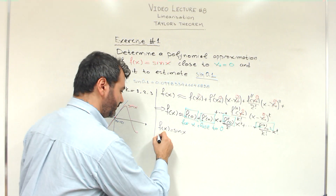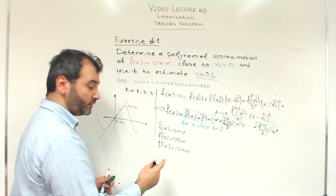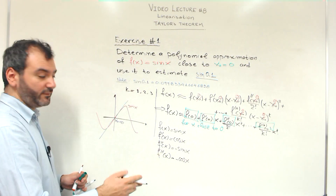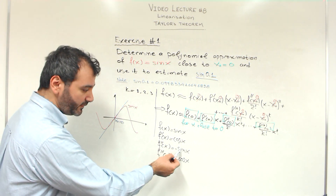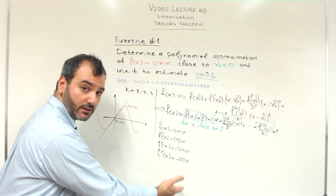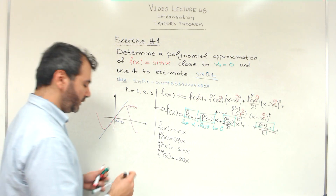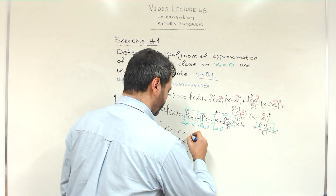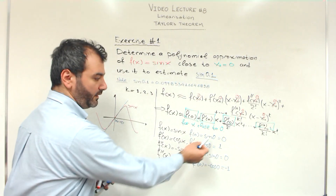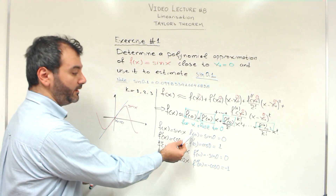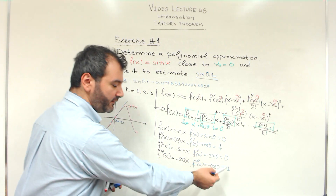So: the function is sine of x. The first derivative is cosine of x. The second derivative is minus sine of x. The third derivative is minus cosine of x. The derivative of sine is cosine, the derivative of cosine is minus sine, and the derivative of minus sine is minus cosine. Now we have the four values: at x = 0, sine is 0, the first derivative is 1, the second derivative is 0, and the third derivative is −1.